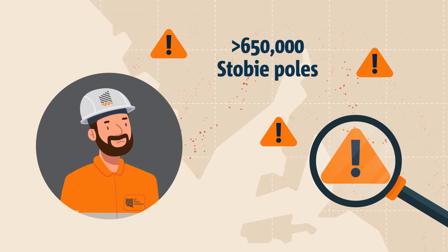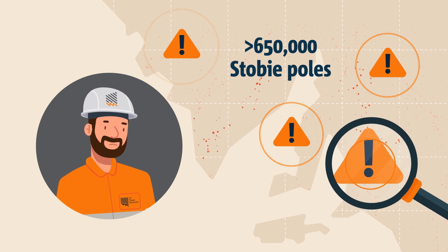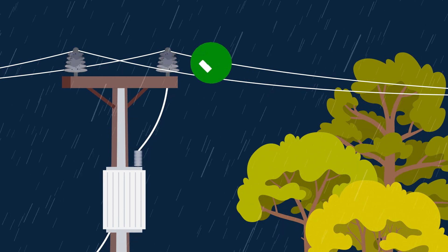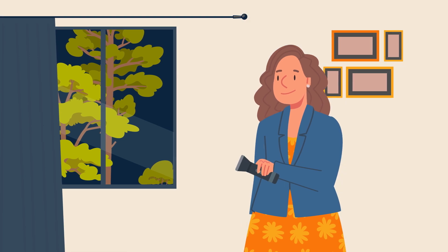But with over 650,000 Stobie poles across the state, we can't get to them all. Ultimately, significant rainfall is necessary to fully resolve and manage the issue of insulator pollution.